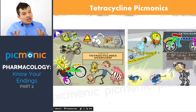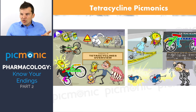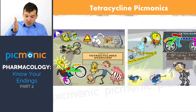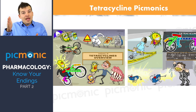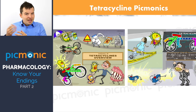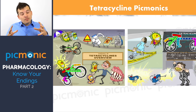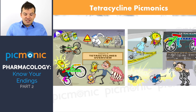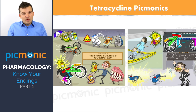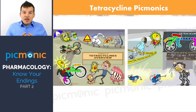The number one point is that you would not want your patient to take tetracyclines along with milk, iron, or antacids that contain magnesium or calcium. Tetracycline binds to those cations and prevents the drug from being absorbed, essentially making it useless.